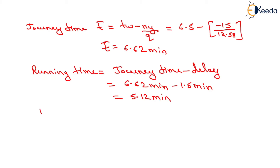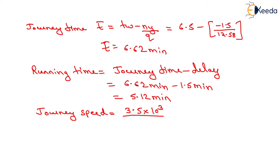Similarly, we have to determine the journey speed. It will be equals to length of travel, that is 3.5 kilometers, converted to meters by multiplying by 10 to the power 3, divided by journey time of 6.62 minutes. We want the answer in terms of seconds, so we multiply by 60, giving 8.81 meters per second.